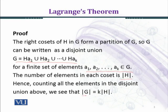we see that order of G equals k times order of H. k is the number of cosets in G. In our partition, Ha₁ union ... union Haₖ. So in this way, we have proved that order of H divides order of G.